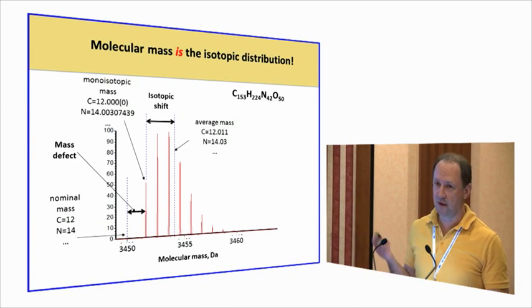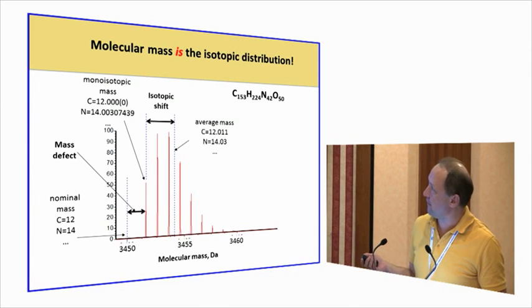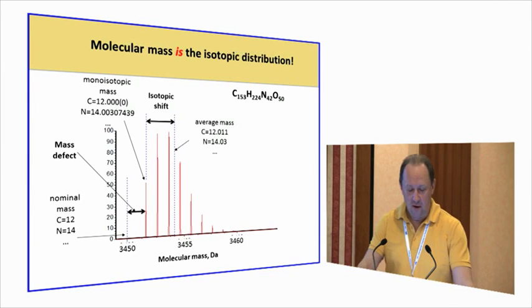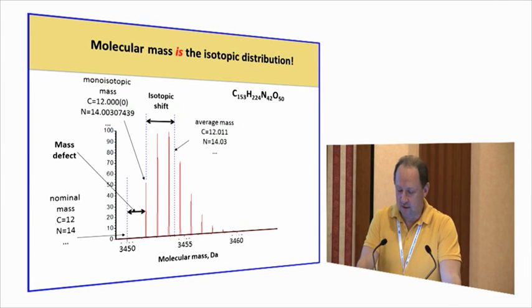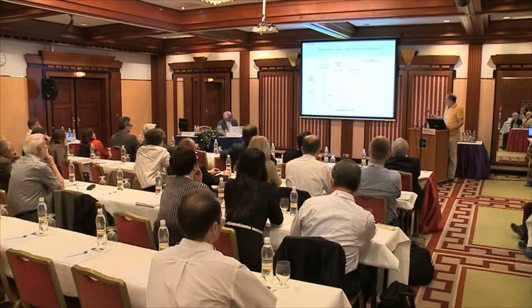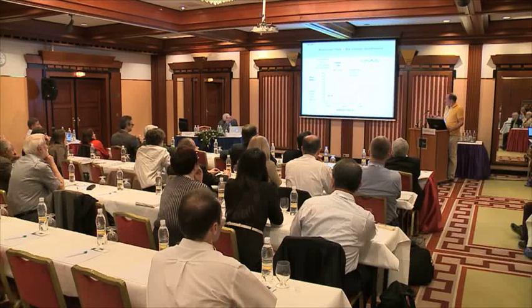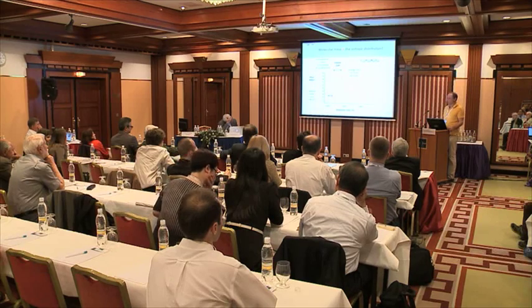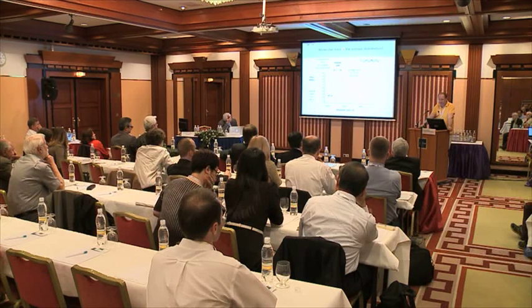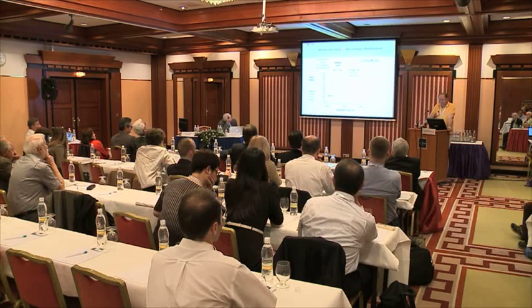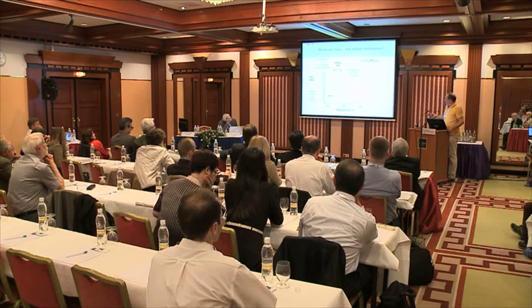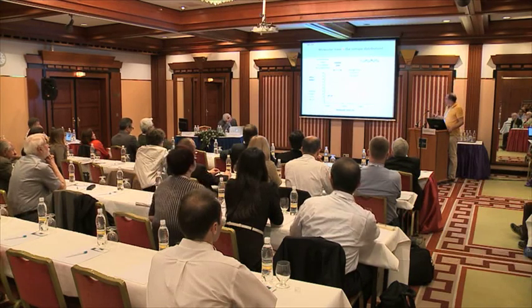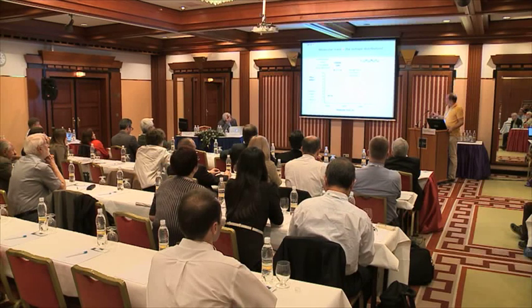It uses the fact that mass of a molecule consisting of several elements, like CHON, is not just a number. It's an isotopic distribution where the first peak, the lightest, is called monoisotopic. It consists of all dominant and single isotopes, C12, N14, and so on. Its position is different compared to the nominal mass, which is integer mass, and this difference is called mass defect. The average isotopic mass is the centroid of this distribution and the difference between the center and the beginning is called isotopic shift.